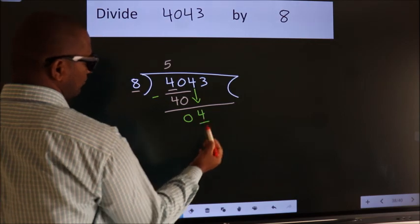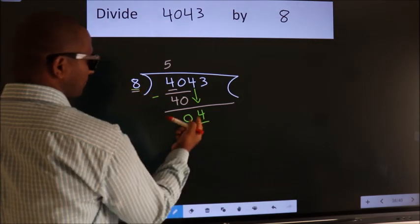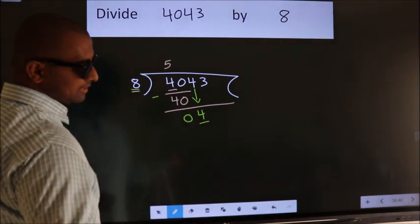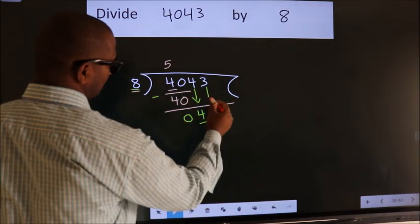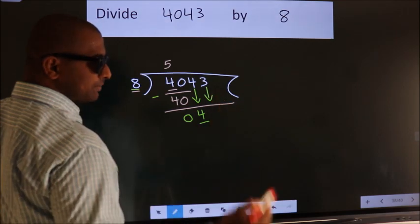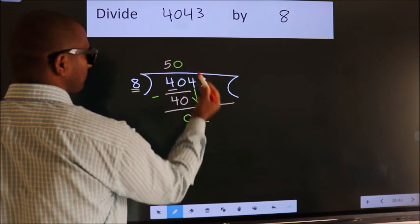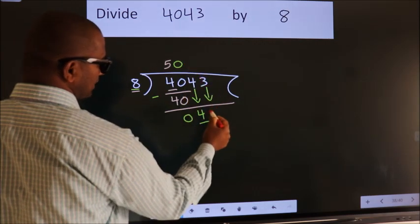Here we have 4, here 8. 4 is smaller than 8. So, we should bring down the second number. And the rule to bring down second number is, put 0 here. Then only we can bring down this number.